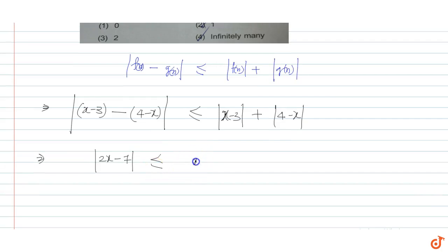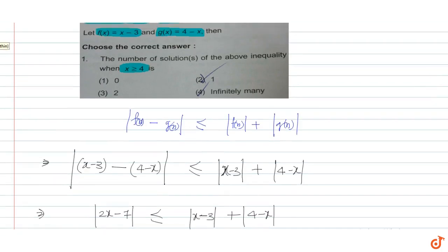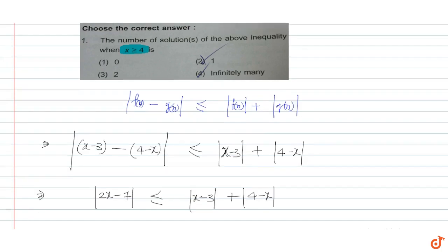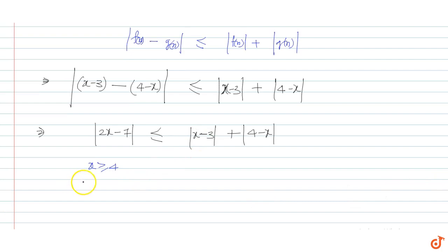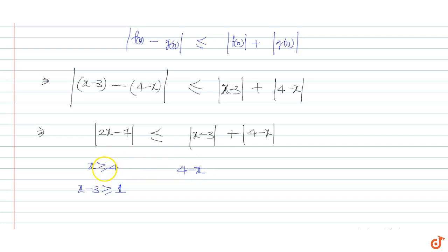Now let me check the signs for x ≥ 4. Here, x - 3 ≥ 1, so x - 3 is a positive quantity. And for 4 - x: when x ≥ 4, we get 4 - x ≤ 0, so 4 - x is a negative or zero quantity.